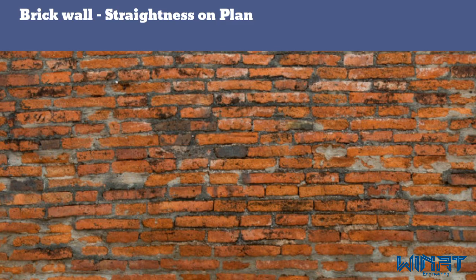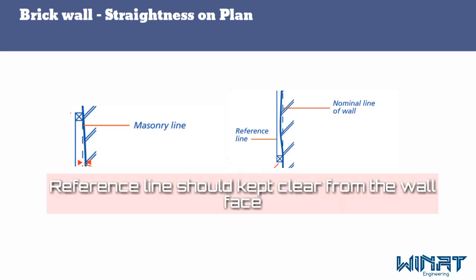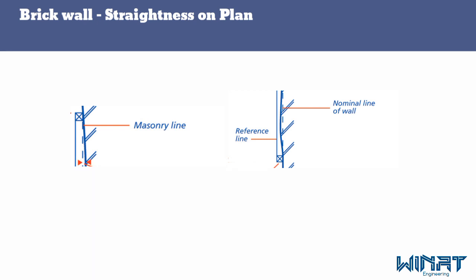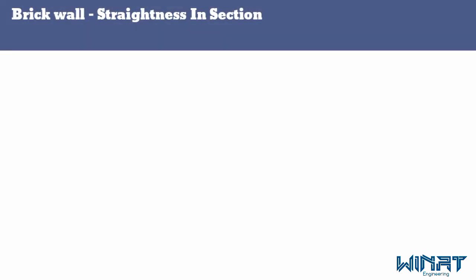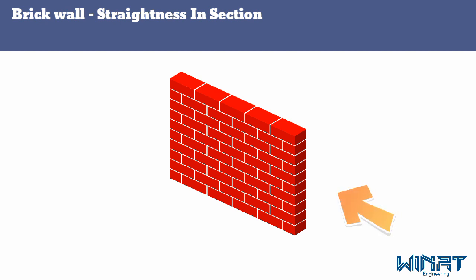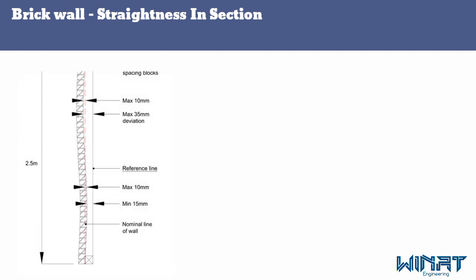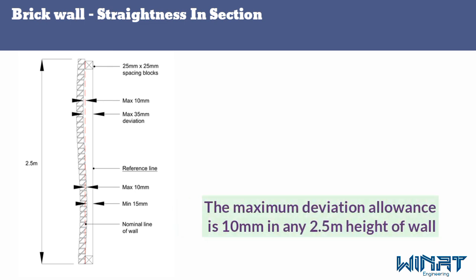Final dimensions should ensure the reference line is kept clear from the wall face. The next tolerance is straightness in section of a brick wall. The tolerance and measuring procedure is the same as straightness on plan, but here we consider the height of the wall. The maximum deviation allowed is 10 millimeters in any 2.5 meters height of wall.